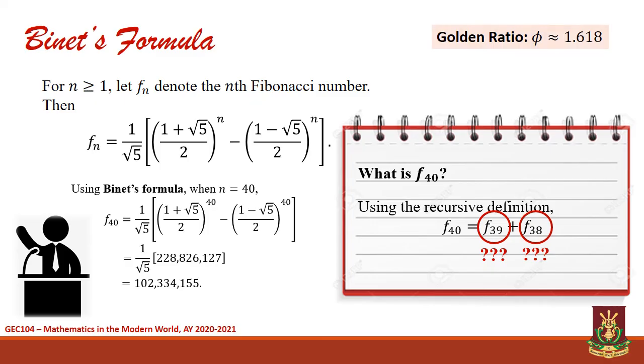On the other hand, Binet's formula can be used to solve for F sub 40 by simply letting n be equal to 40. As we can see, Binet's formula provides an explicit yet non-recursive way for finding the Fibonacci numbers. Another interesting point is the fact that this identity is approximately 1.618. Thus, even Binet's formula is actually expressed in terms of the golden ratio.